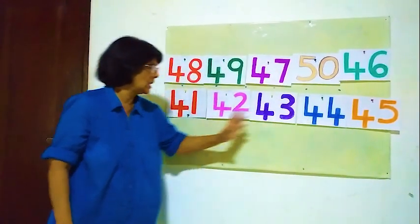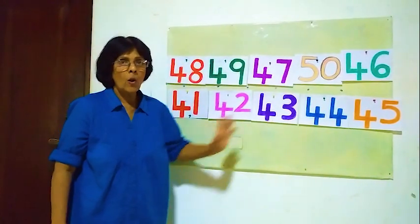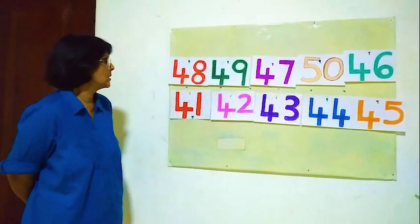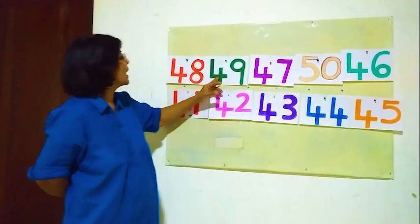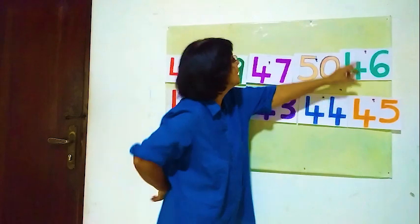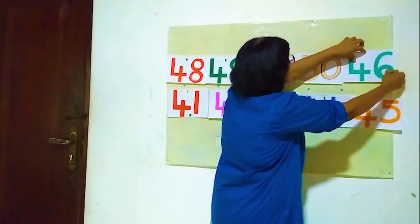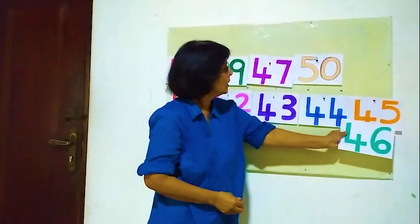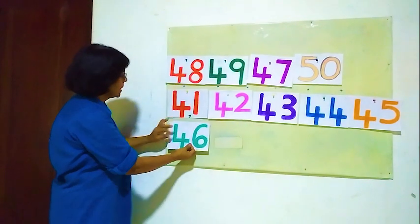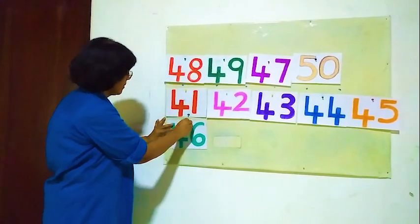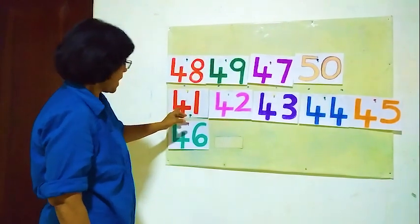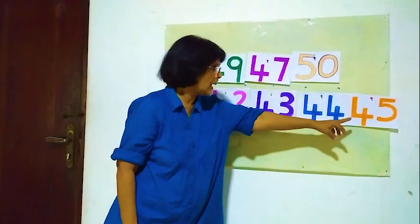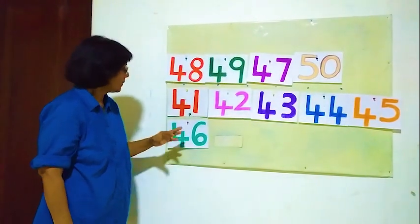All 5 numbers are there in order. Now after 45, what is the next number? 46. Where's 46? Here 48, 49, 47, 50, 46 — here 46. After 45, 46. Now: 41, 42, 43, 44, 45, 46.